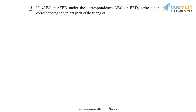Question 3 of this exercise says: if triangle ABC is congruent to triangle FED under the correspondence ABC corresponding to FED, write all the corresponding congruent parts of the triangles.